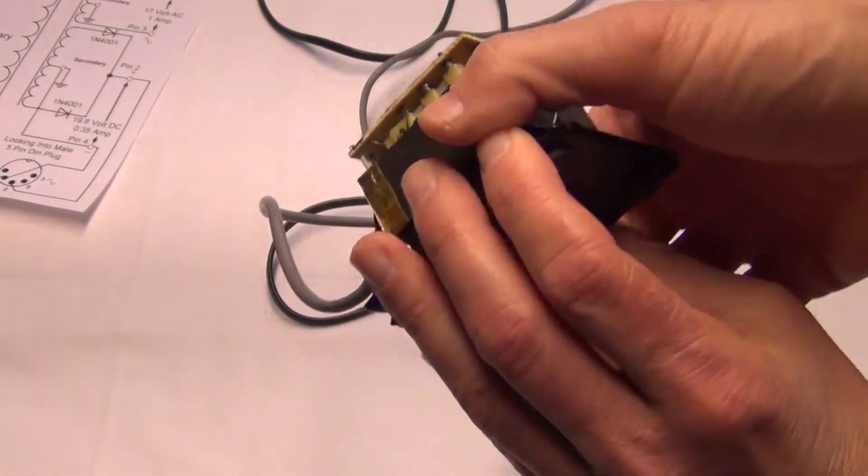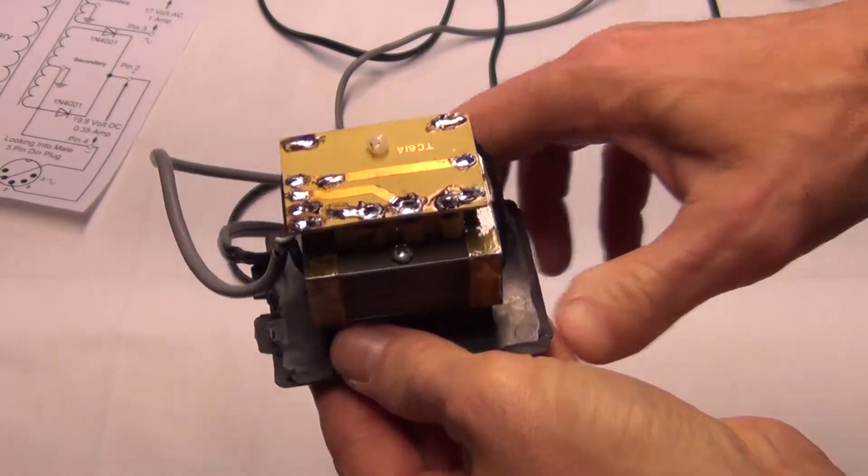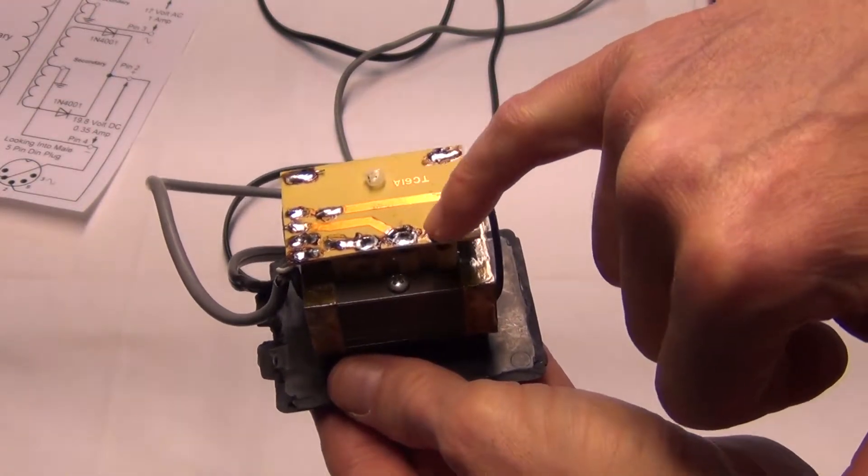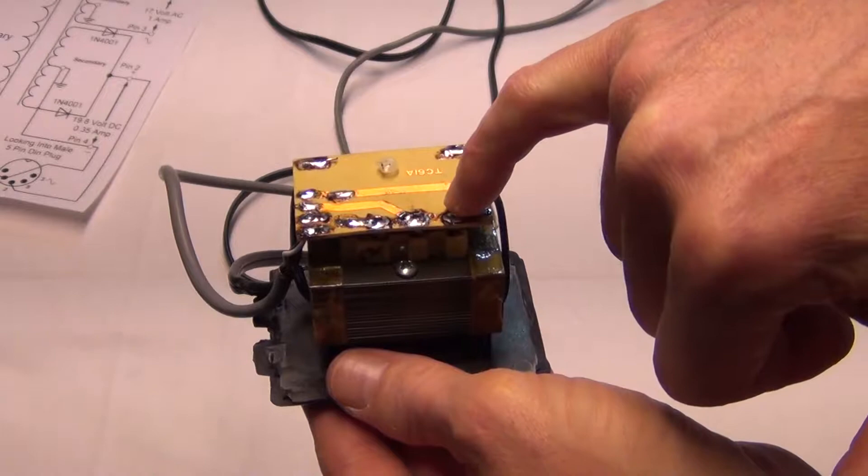So for the secondary, what we have appears to be here anyway, is I notice one of the primary windings goes to this pin, two are tied to this pin,